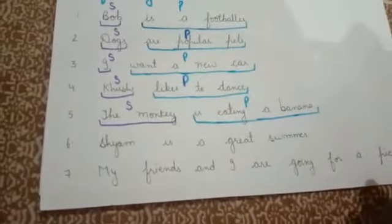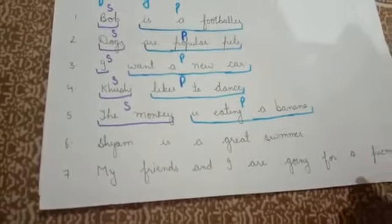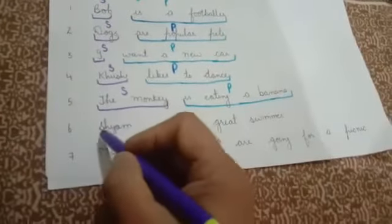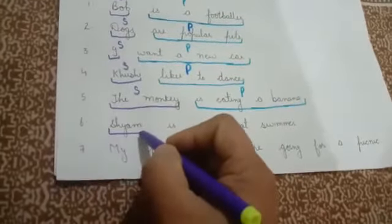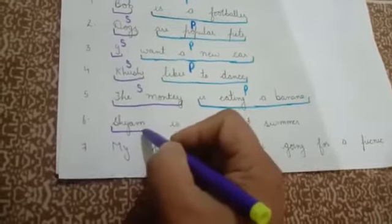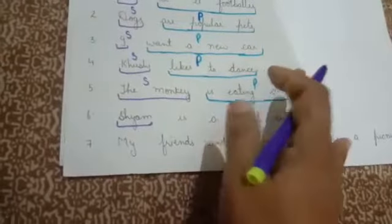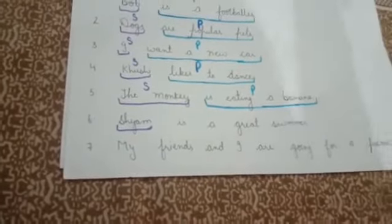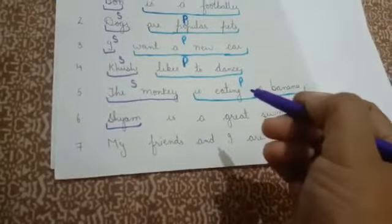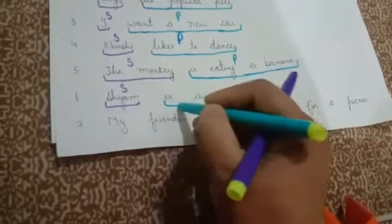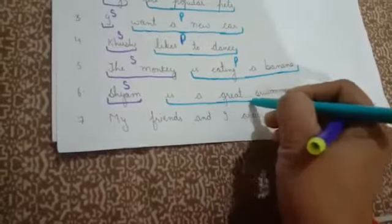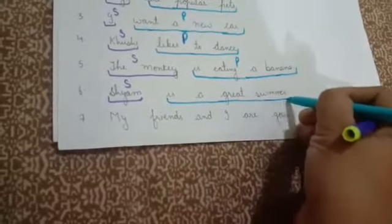'Sharm is a great swimmer.' Here the noun is Sharm. That means the focus of the sentence is on the noun Sharm. So 'Sharm' is the subject, and the rest of the part is the predicate.